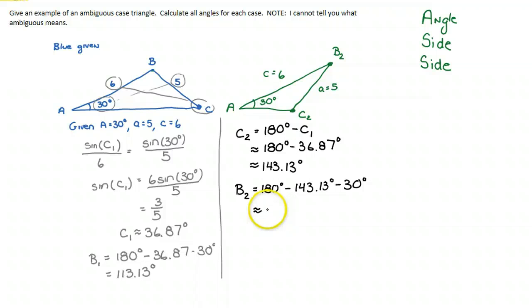This is what I mean by ambiguous case. An ambiguous case triangle is a triangle where enough information is given that you can draw a triangle, but there could be multiple cases that arise. In this specific example where we're given 30 degrees, 6, and 5, it turns out there are two unique cases.